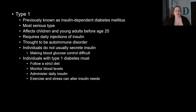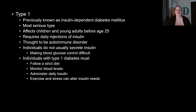Type one diabetes was previously known as insulin-dependent diabetes mellitus. It is the most serious type, affecting children and young adults before the age of 25, though rare cases can be diagnosed later. The problem with this type is that it is probably an autoimmune disorder — something has happened to the cells that release insulin in the pancreas so they're not doing it anymore. This could be a genetic or autoimmune issue, and because of that they need to use insulin injections given daily. Individuals do not usually secrete insulin, making blood glucose control very difficult.